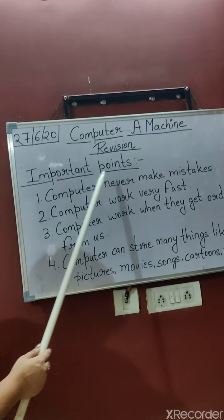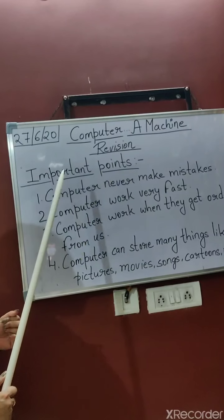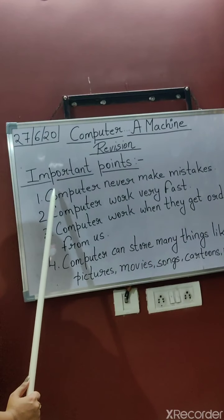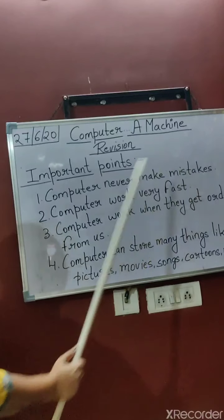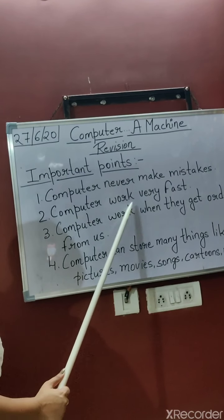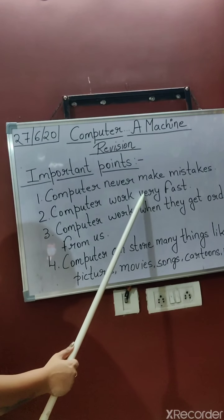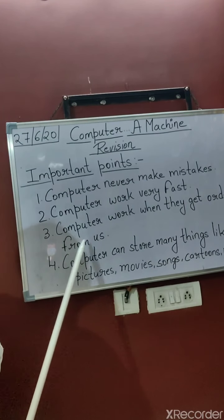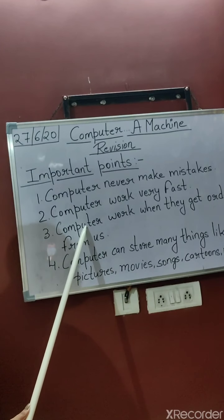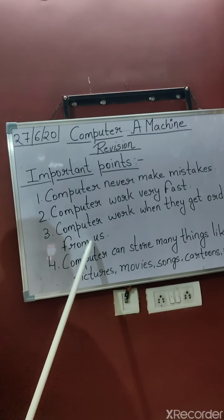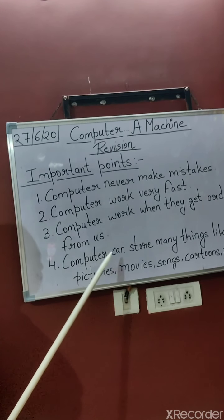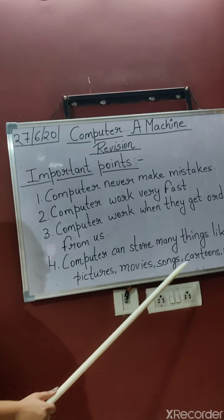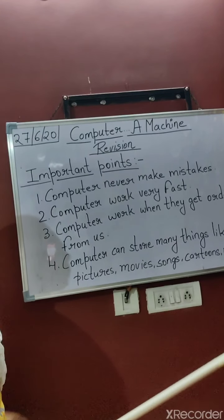Here are some important points to remember. First, a computer never makes mistakes. Second, a computer works very fast. Third, a computer works only when it gets orders from us. Fourth, a computer can store many things like pictures, movies, songs, cartoons, numbers, and many more things.